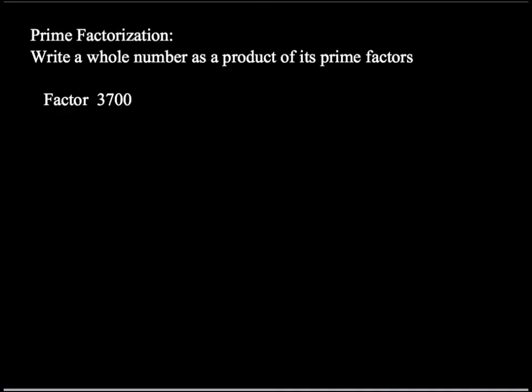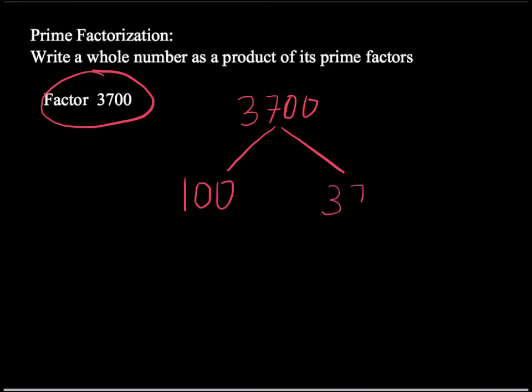So here's our first example. Prime factorization is writing a whole number as a product of its prime factors. We're asked here to factor 3,700. Well, this is one technique we can use. We can simply ask ourselves, can we think of any number that divides into 3,700? If I look at it, I see those two zeros on the end, and that tells me that 100 times 37 is going to give you 3,700.